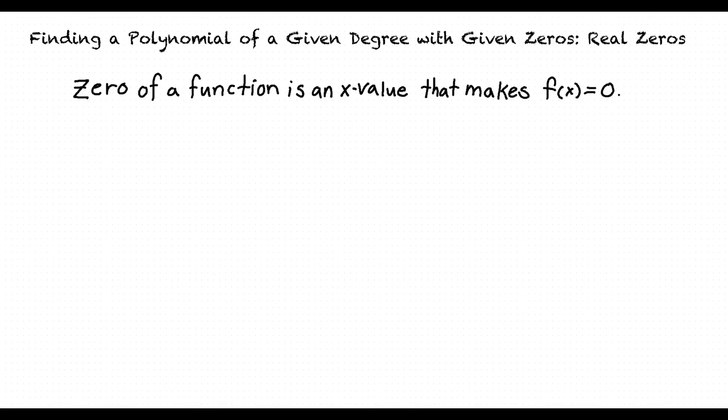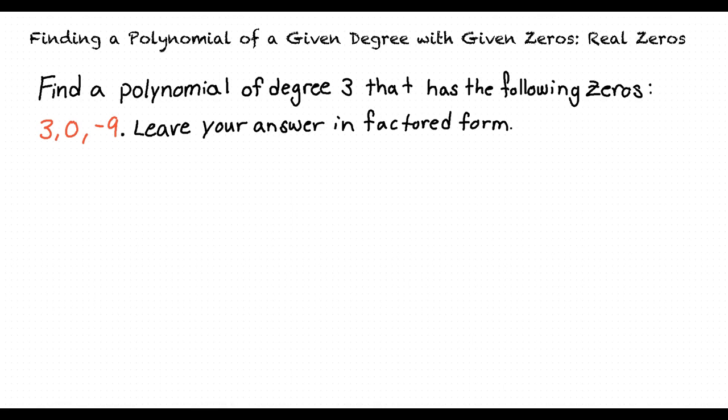Let's try an example. This problem is asking us to find a polynomial with a degree of 3 that has zeros of 3, 0, and negative 9, and we are told to leave our answer in factored form.